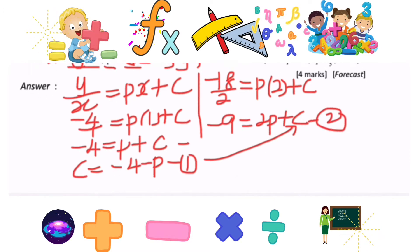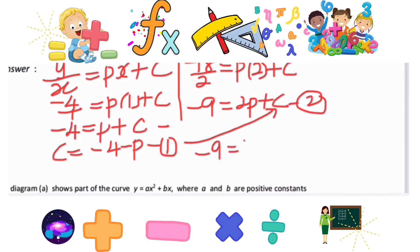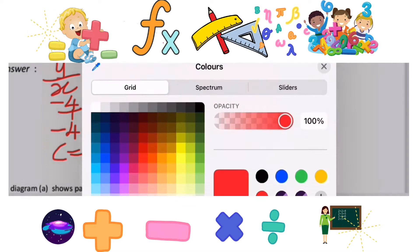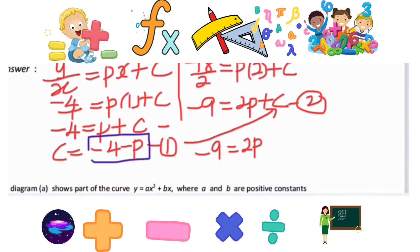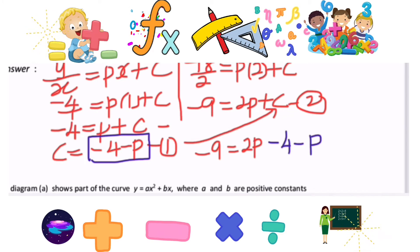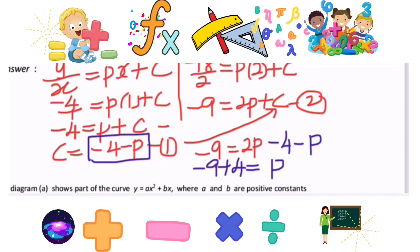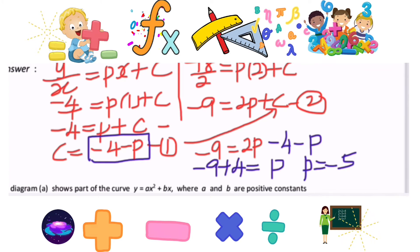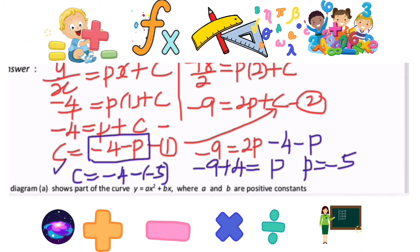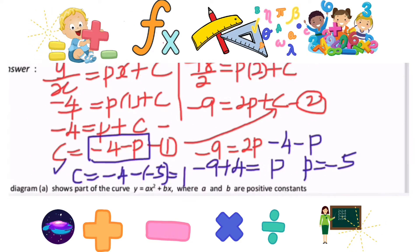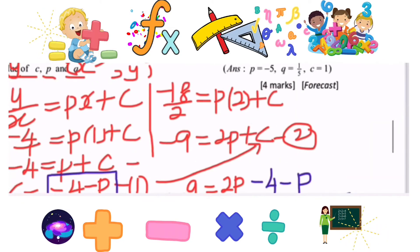We have -9 = 2p + c. Substituting c = -4 - p, we get -9 + 4 = p, so p = -5. After finding p = -5, we find c: c = -4 - (-5) = 5 - 4 = 1. So c = 1.